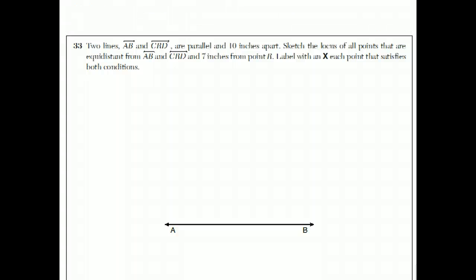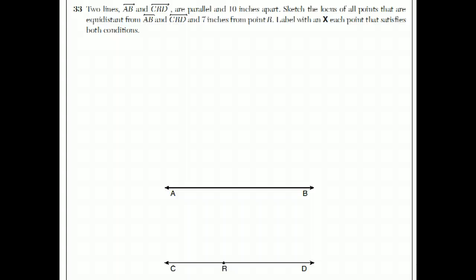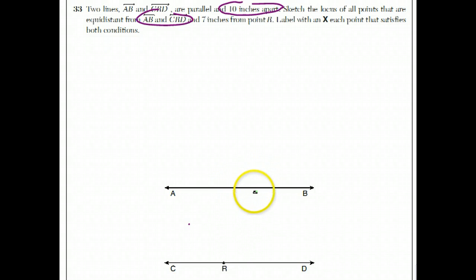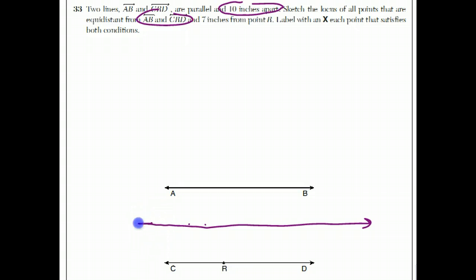Question 33. Lines AB and CD are parallel and 10 inches apart — though this is noted as a poorly worded question since the diagram isn't drawn to scale. Sketch the locus of points equidistant from AB and CD, and also 7 units from point R. Points equidistant from two parallel lines form a line parallel to both and halfway between them, making each distance 5 inches.